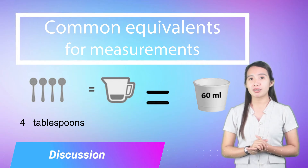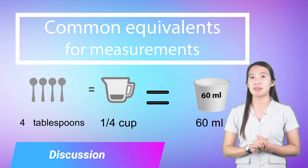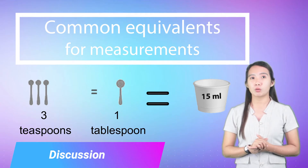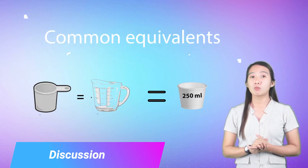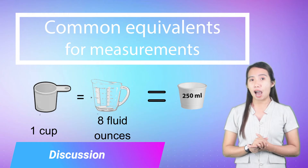4 tablespoons is equal to 1/4 cup and is also equal to 60 milliliters. 3 teaspoons is equal to 1 tablespoon and is also equal to 15 milliliters. 1 cup is equal to 8 fluid ounces and is also equal to 250 milliliters.